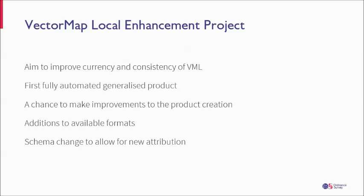Changing that required us to make a new system, so we've also had the opportunity at the same time to change other things that we've received customer feedback on or that we've wanted to improve. So you'll see some changes to the schema, there's some new attribution, there's new feature codes, and we've also been able to respond to customer feedback around formats to add the additional availability for GeoPackage on the vector data as well.